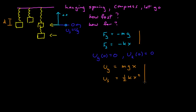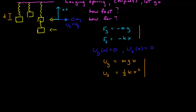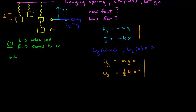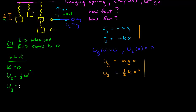Now we need to identify two points in time. For Part 1, we want to know how fast it's going when it comes back to equilibrium. Our two points are: initial — when it's released — and final — when it comes back to x = 0. Initially it's at rest, so kinetic energy is zero. The spring potential energy at x = d is ½kd², and the gravitational potential energy is mgd.